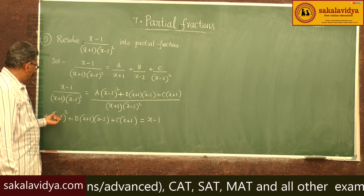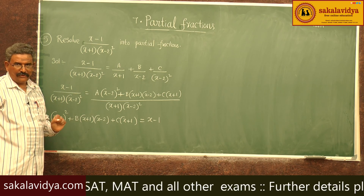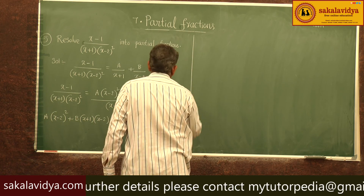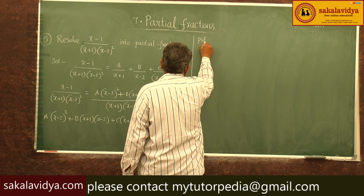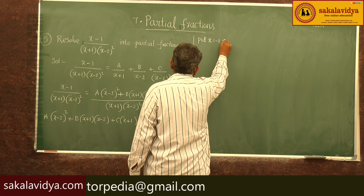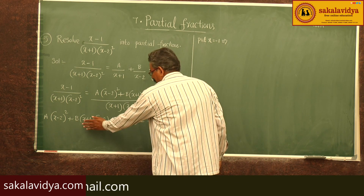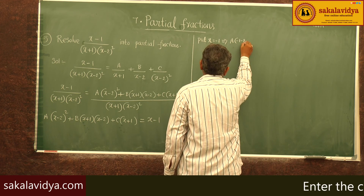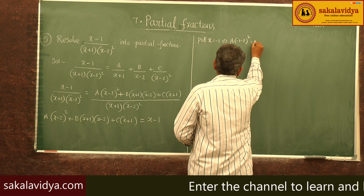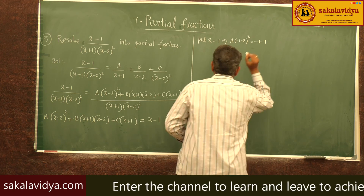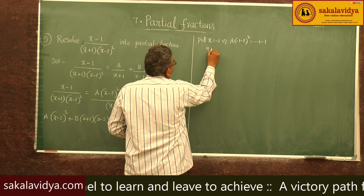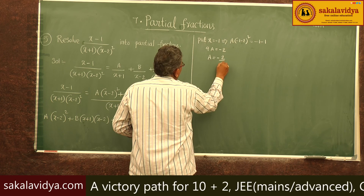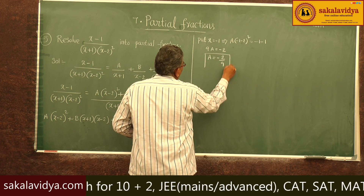We have two linear factors, x plus 1 and x minus 2, so we substitute their zeros. Put x equal to minus 1: the B and C terms become 0, giving A times (minus 1 minus 2) squared equals minus 1 minus 1. So 9A equals minus 2, therefore A equals minus 2 by 9.